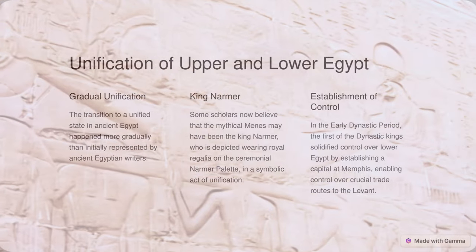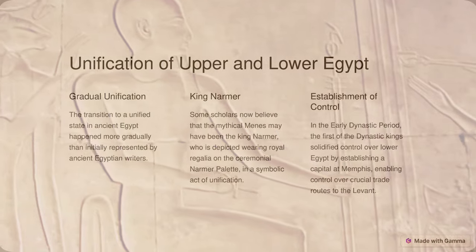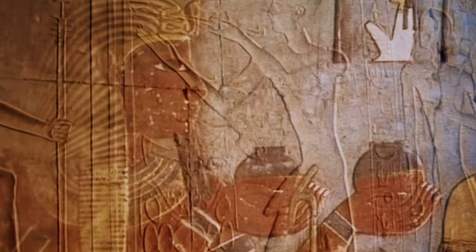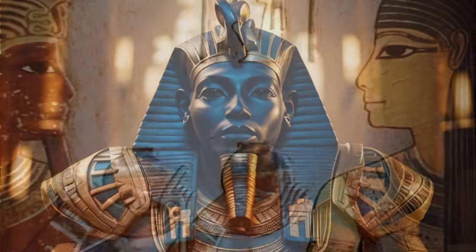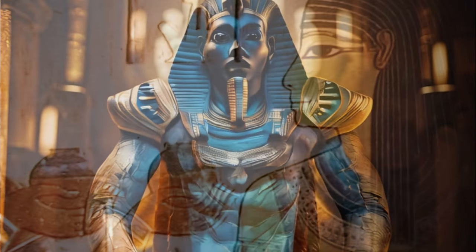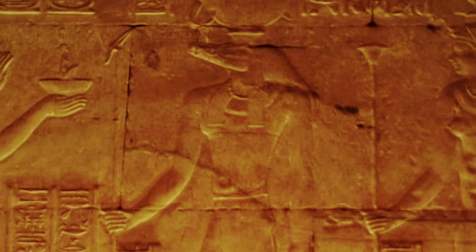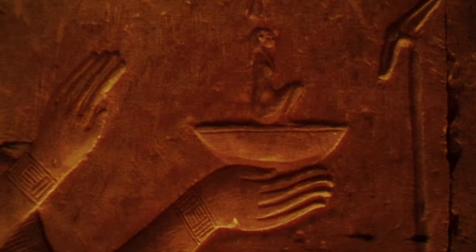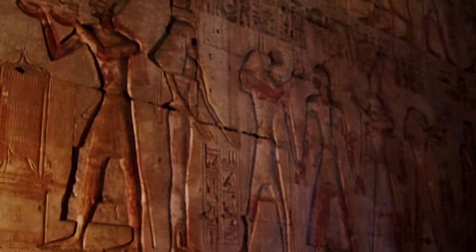In the early dynastic period, which began about 3000 BC, the first of the dynastic kings solidified control over Lower Egypt by establishing a capital at Memphis, from which he could control the labor force and agriculture of the fertile delta region, as well as the lucrative and critical trade routes to the Levant. The increasing power and wealth of the kings during the early dynastic period was reflected in their elaborate mastaba tombs and mortuary cult structures at Abydos. The strong institution of kingship developed by the kings served to legitimize state control over the land, labor, and resources essential to the survival and growth of ancient Egyptian civilization.